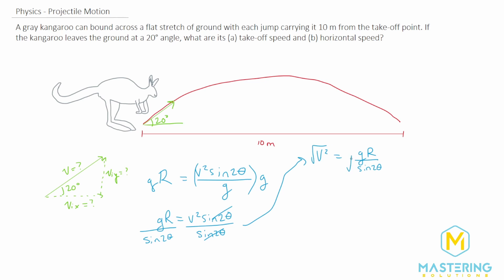So now we have v squared is equal to g times r divided by sine of 2 theta. We'll take the square root of both sides, and now we have v, or the velocity right here, the takeoff speed, is equal to the square root of g r divided by sine of 2 theta.